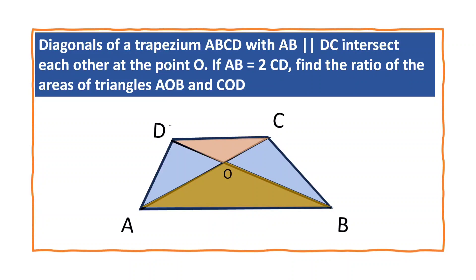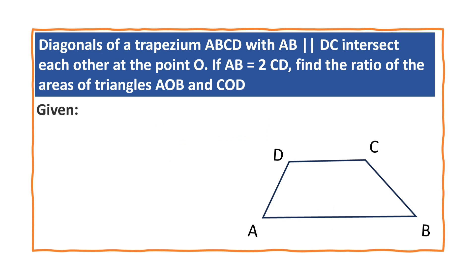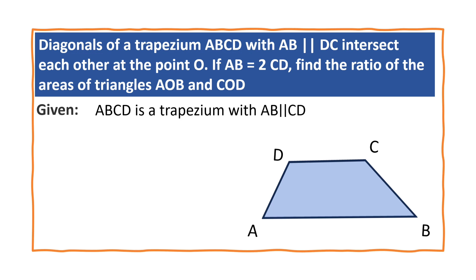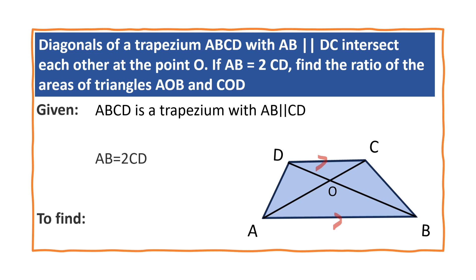Diagonals of a trapezium ABCD with AB parallel to DC intersect each other at the point O. If AB is equal to 2CD, find the ratio of the areas of triangle AOB and COD. Here, we are given a trapezium ABCD where AB is parallel to CD, diagonals intersect each other at point O, and AB is equal to 2CD. We have to find the ratio of the areas of triangle AOB to area of triangle COD.